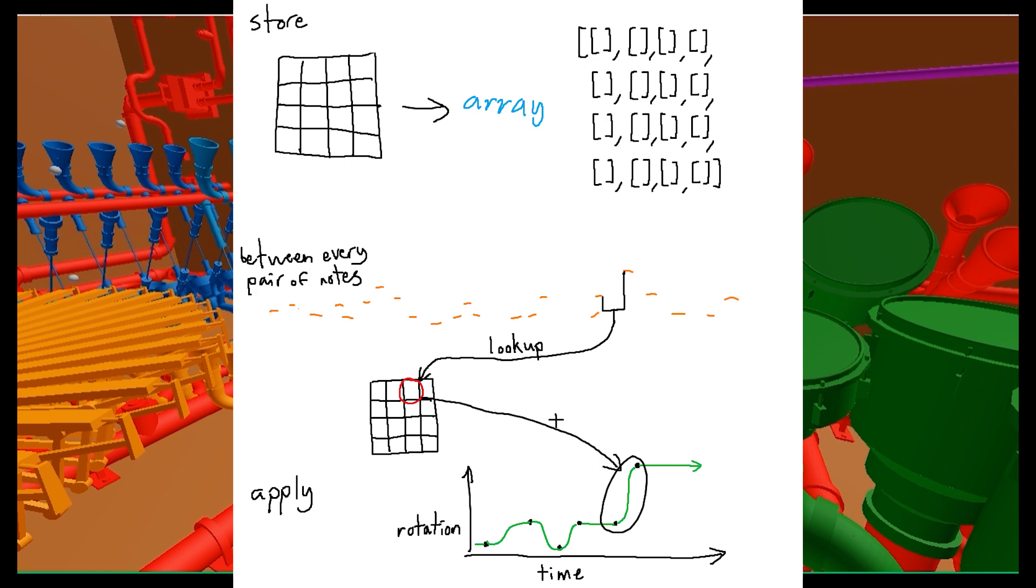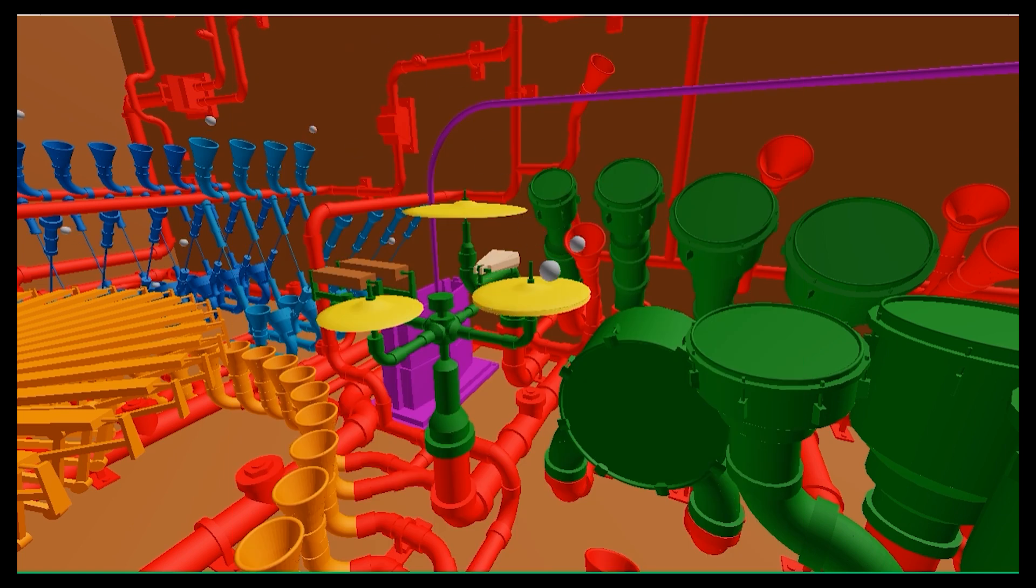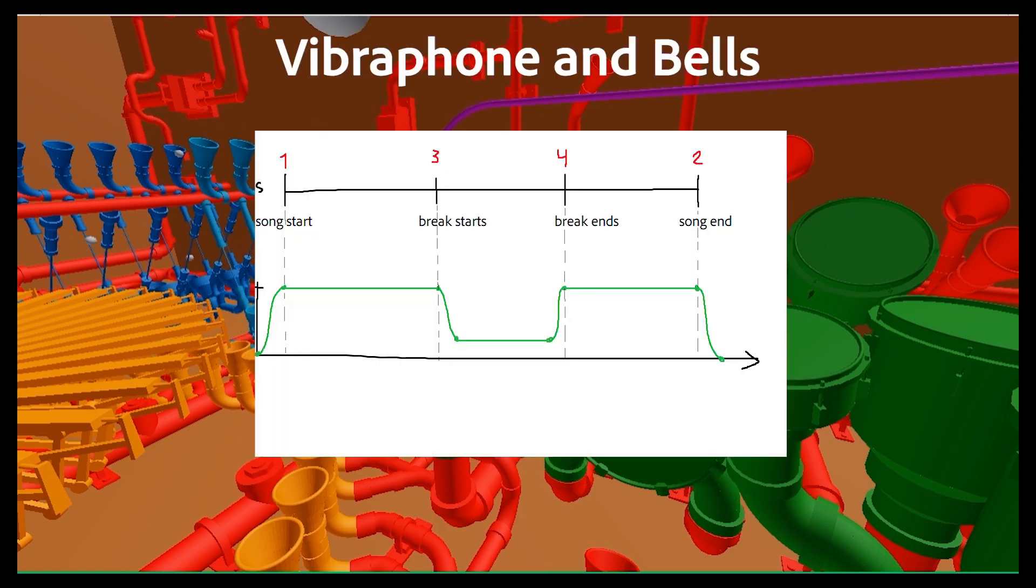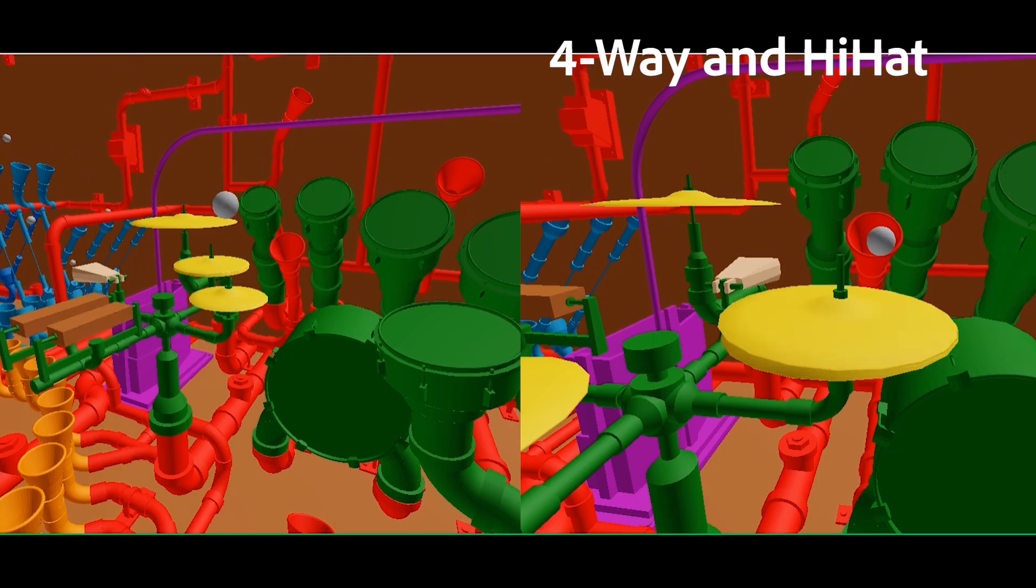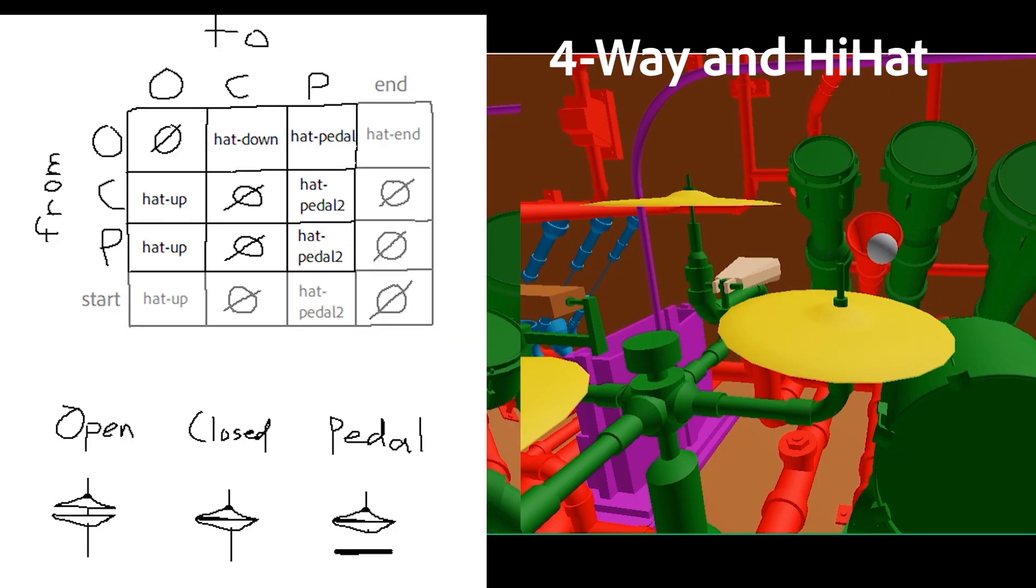In total, there are 4 different keyframe tracks that we want to make. The vibraphone and bells, they both move in and out during sections. The four-way percussion and the hi-hat movement are all according to lookup matrices.